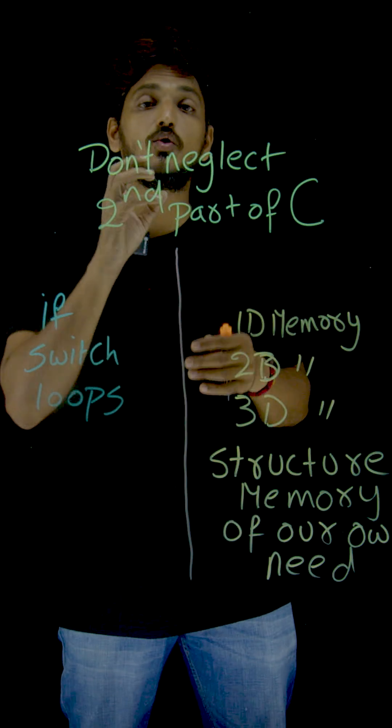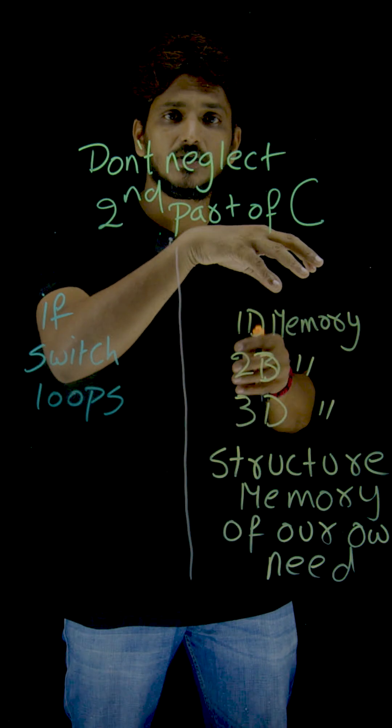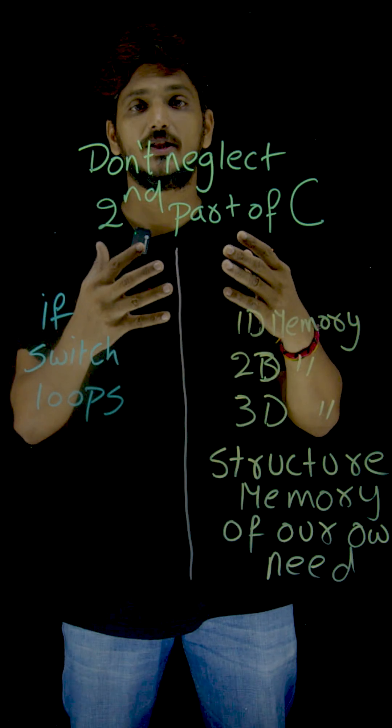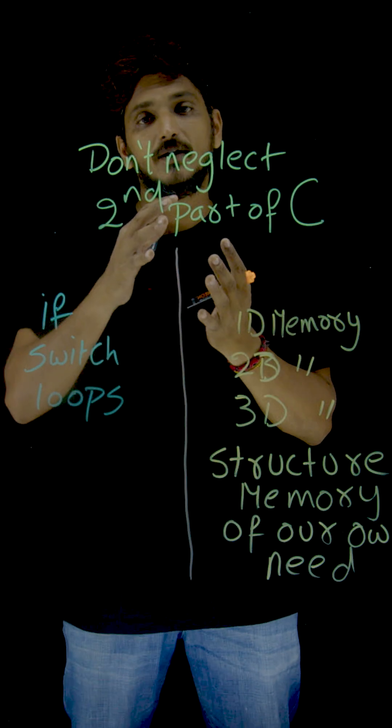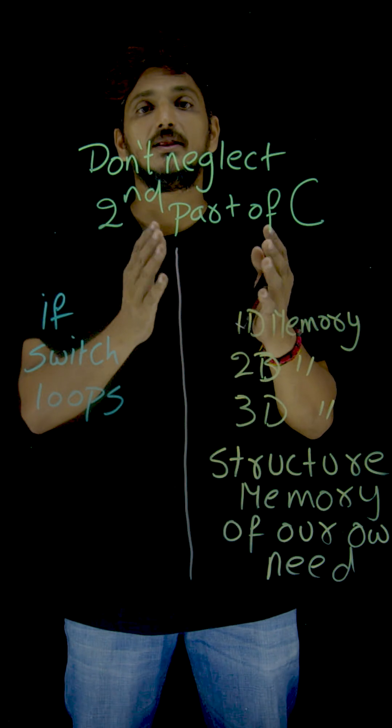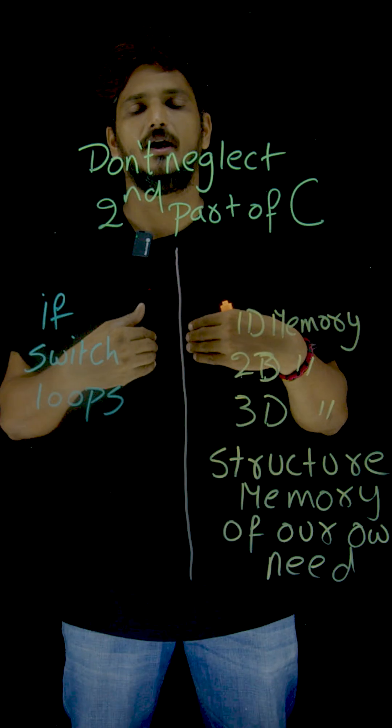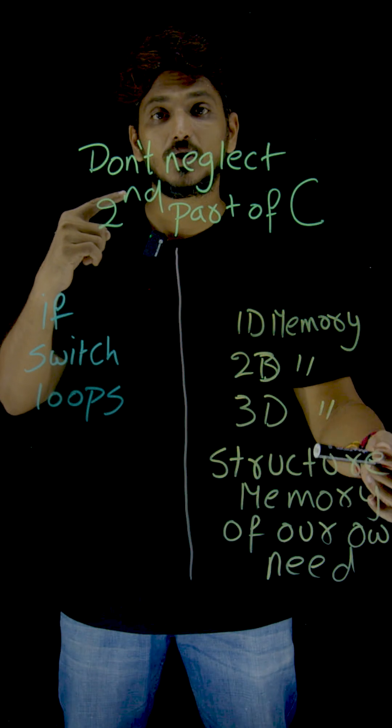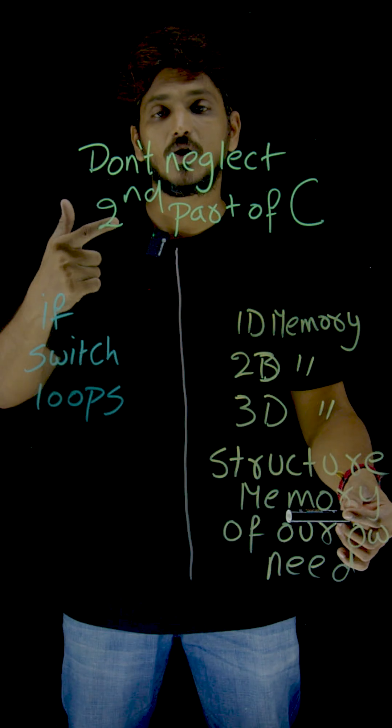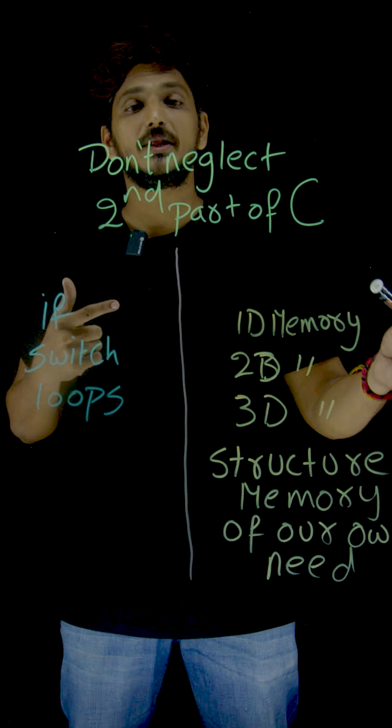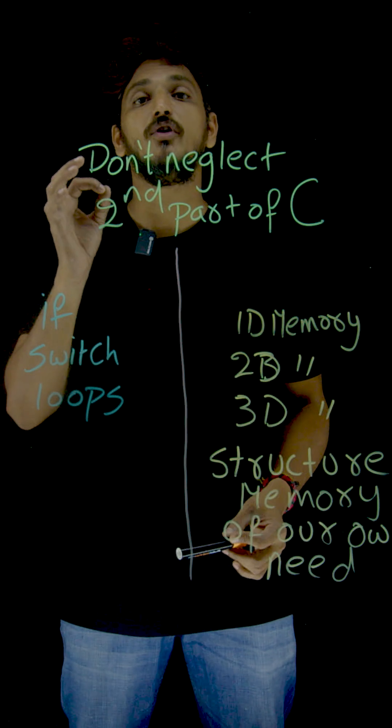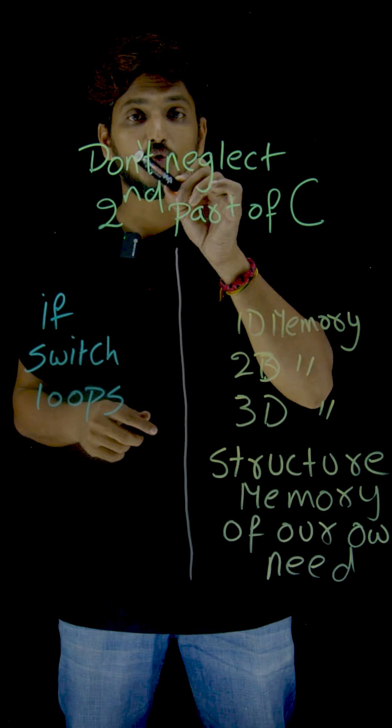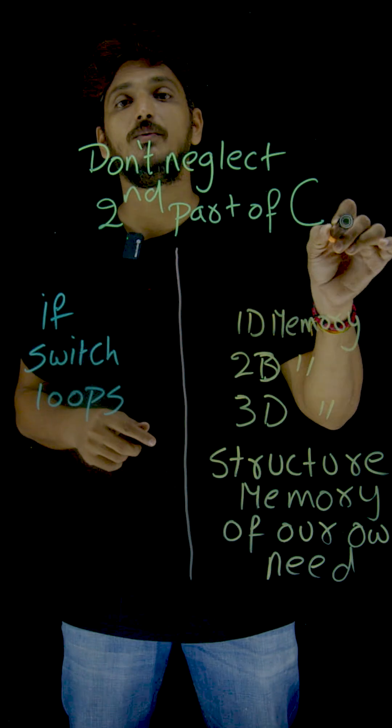How you can store data in these memory locations? How you can access the data from these memory locations? Not only that, we can design memory the way we needed. This is very important. In the fifth unit, we are going to cover structures concept. All these memory-related issues are very important to understand. That's why you should not neglect the second part of C programming.